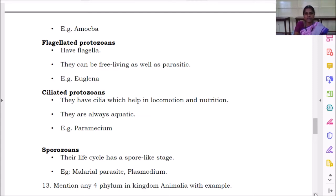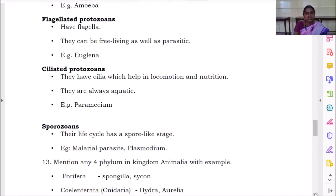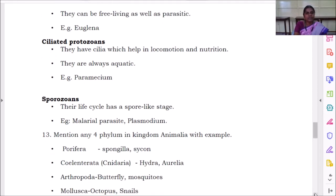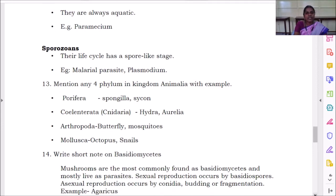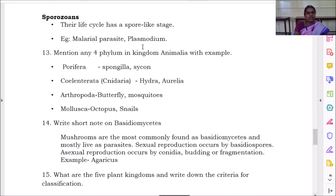Next is sporozoans. What are sporozoans? Malarial parasite plasmodium. Their life cycle has a spore-like stage. Mention any four phylum in kingdom animalia with example. So there are almost 10 phyla in kingdom animalia.